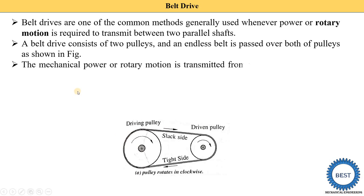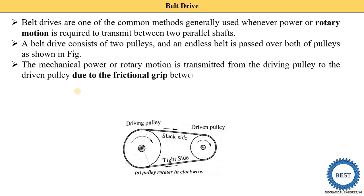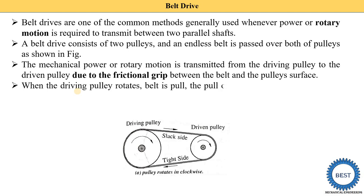The mechanical power or rotary motion is transmitted from the driving pulley to the driven pulley due to the frictional grip between the belt and the pulley surface. Belt drive falls under the frictional category, meaning power is transmitted from the driving shaft to the driven shaft due to friction. That's why it is called a frictional drive.